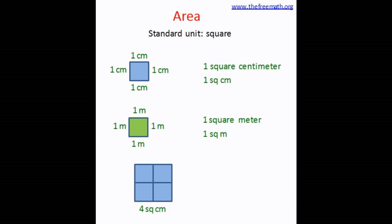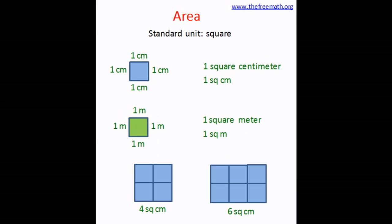Now let's look at this area. This area is covered by 4 small squares, so the area of this figure is 4 square centimeters. What is the area of this figure? 1, 2, 3, 4, 5, 6 — six squares cover this area, so the area of this figure is 6 square centimeters.